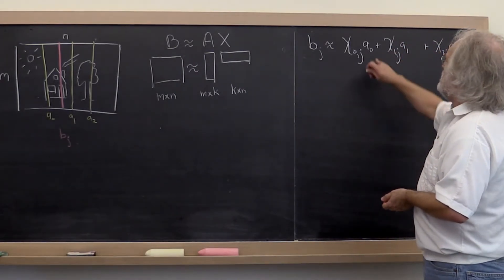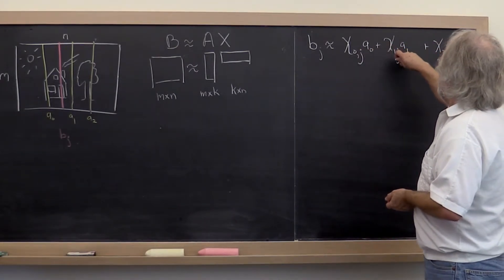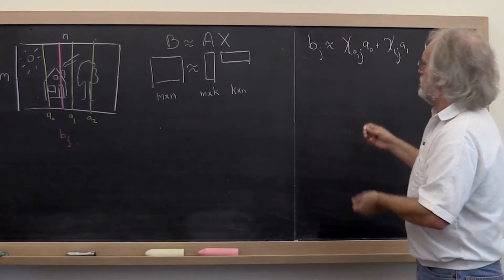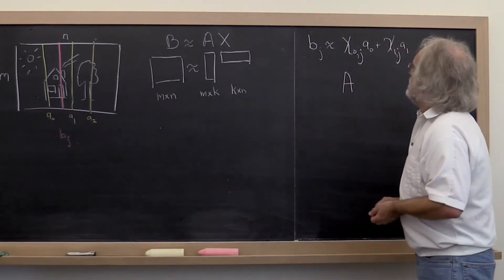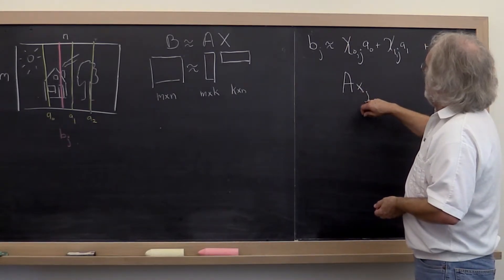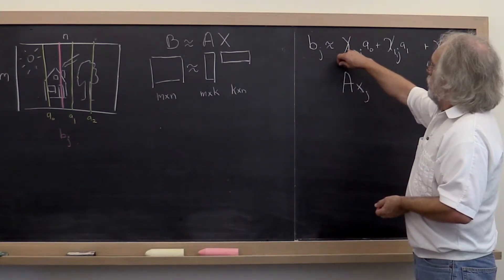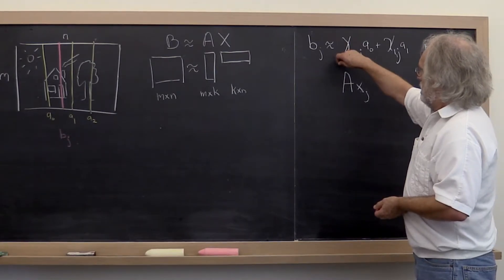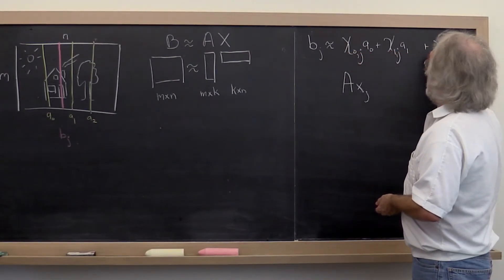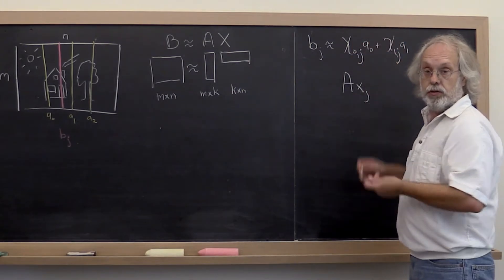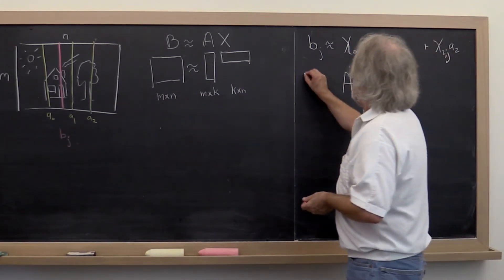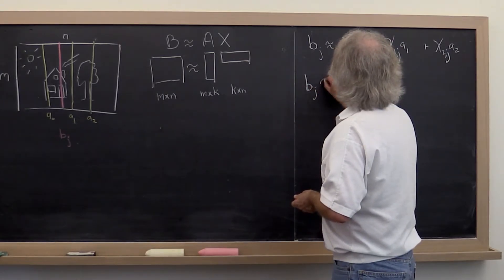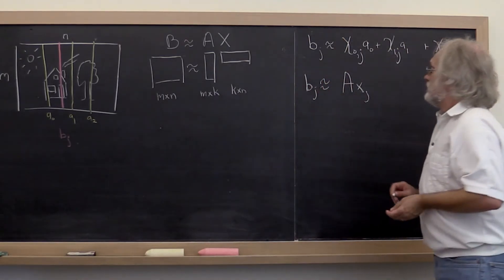Now we said let's take A0, A1, A2 to be the columns of A. So we can also think of this as A times xj, where xj is now the vector with entries chi0j, chi1j, chi2j, or in the more general case with k entries like that. So what we're saying is that Bj is approximately A times xj.